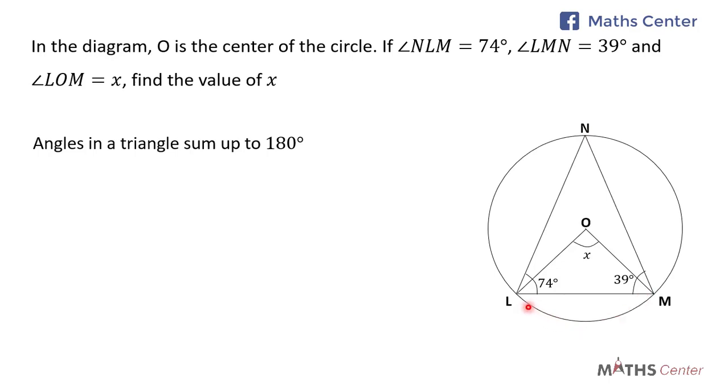If we consider the triangle NLM, we have the angle formed at point L to be 74 degrees, and we have the angle formed at point M to be 39 degrees. So we can say that 74 degrees, which is the angle formed at point L, plus 39 degrees, which is the angle formed at point M, plus angle MNL is equal to 180 degrees.